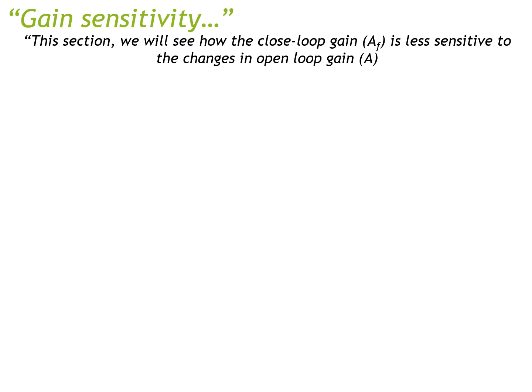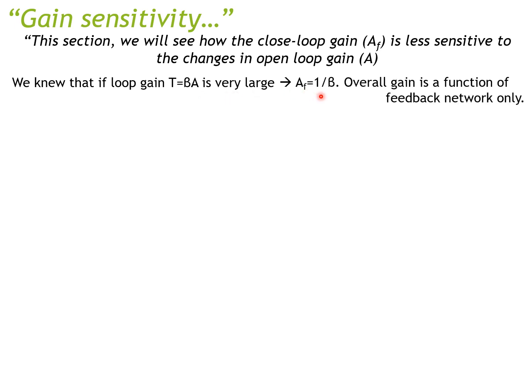If we know that the loop gain T = βA is very large, as we showed in the previous lecture, we can estimate our closed loop gain Af to be approximately 1/β. So basically the overall gain of the circuit is a function of the feedback network only.